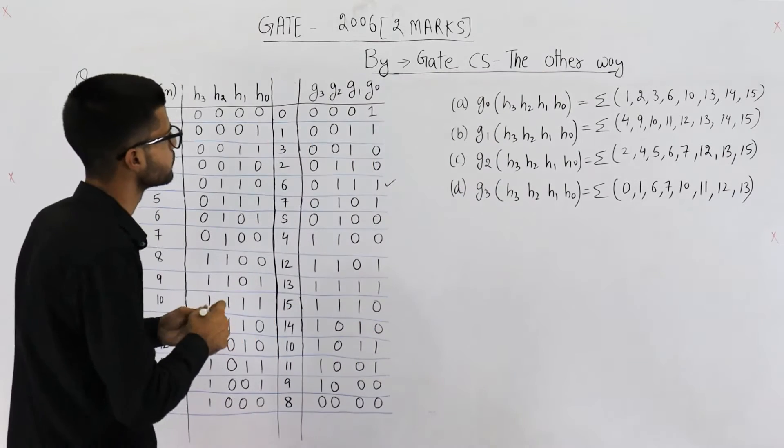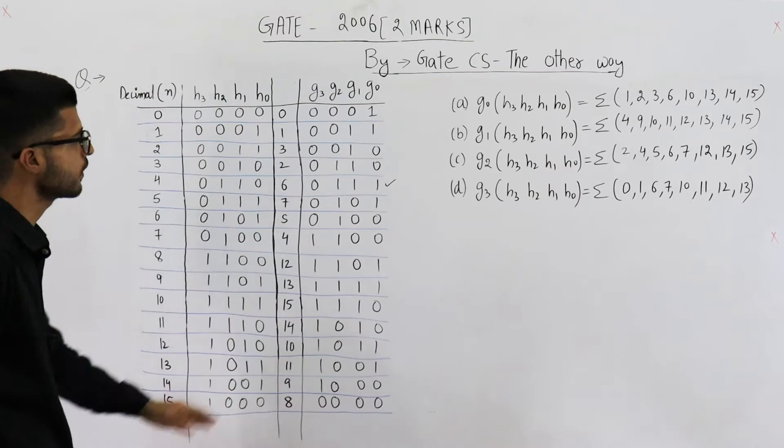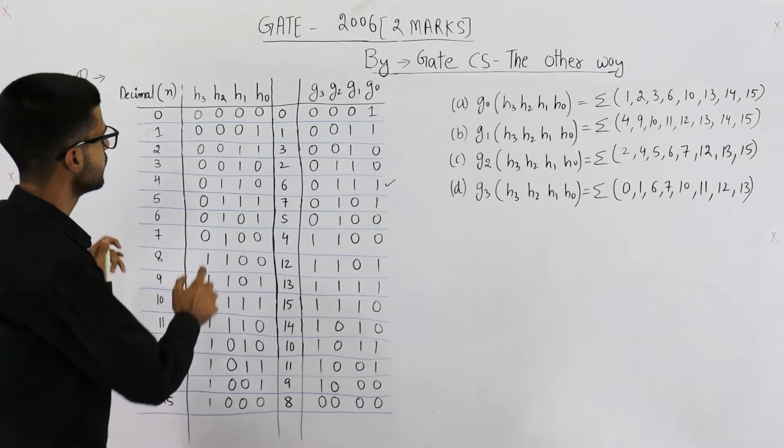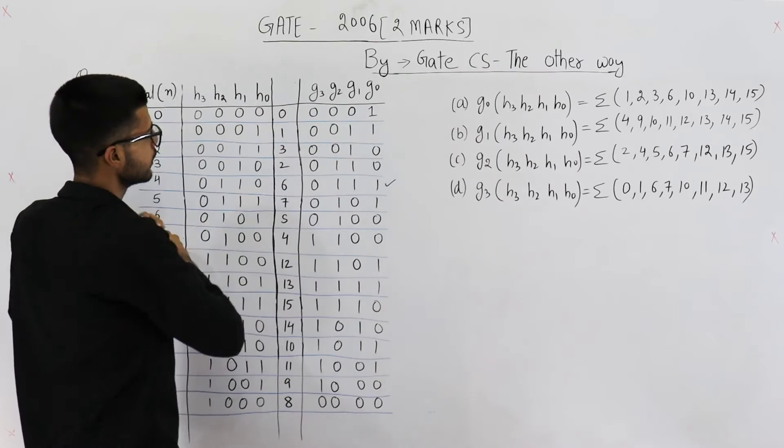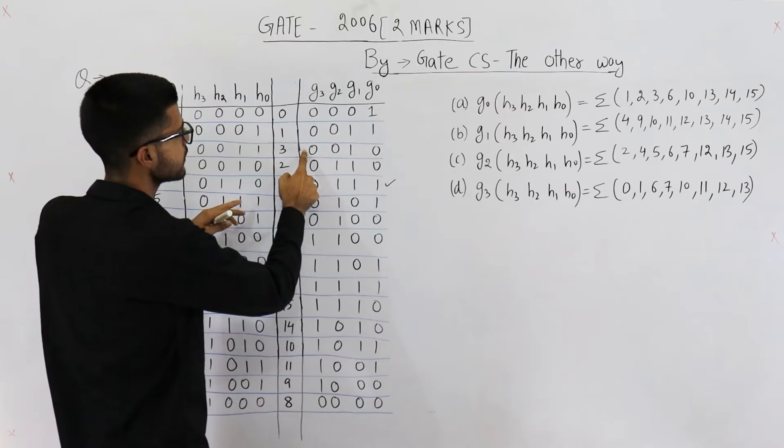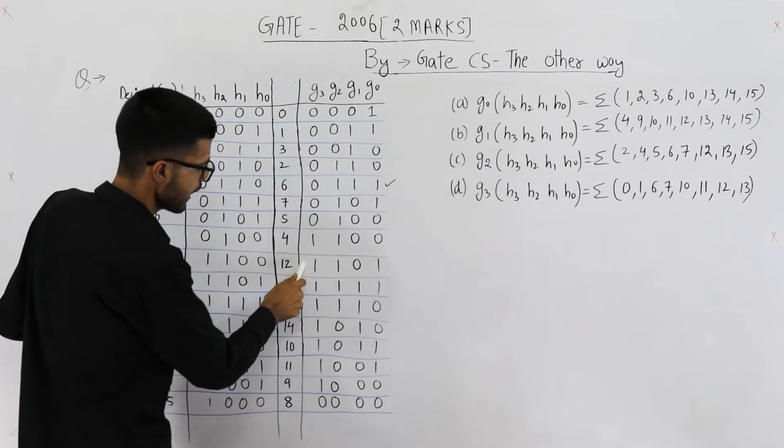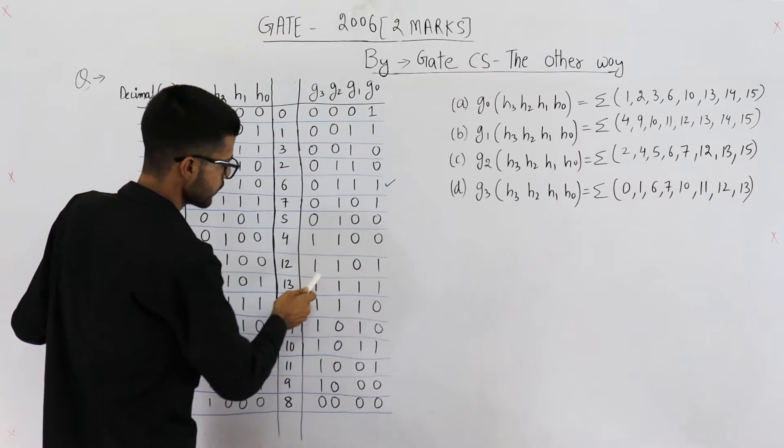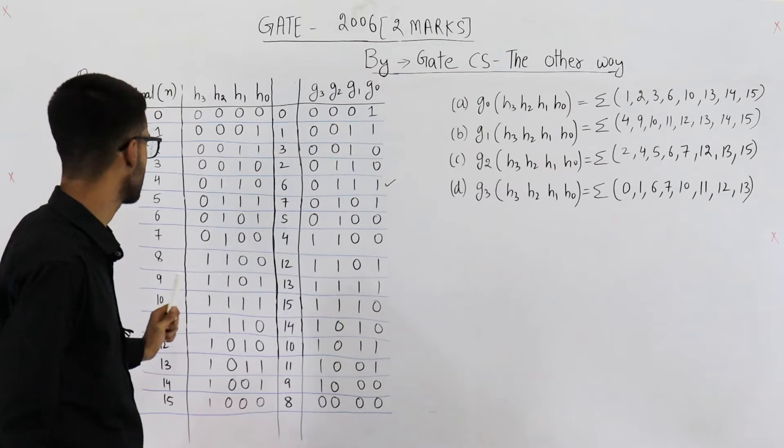One thing that you can notice is see after filling this column for h. How did I get the column for g? See, 0, 0, 0, 1 is written as it is here. Similarly, 0, 0, 1, 0 is written as it is in this column. 1, 1, 0, 1 is written as it is in this column. 1, 1, 0, 1. So that's just one column below. h is one column below.